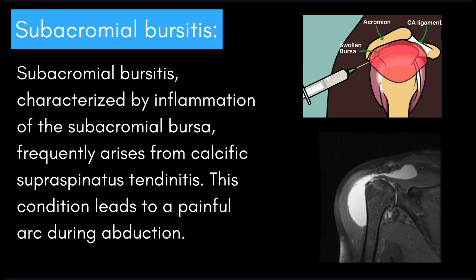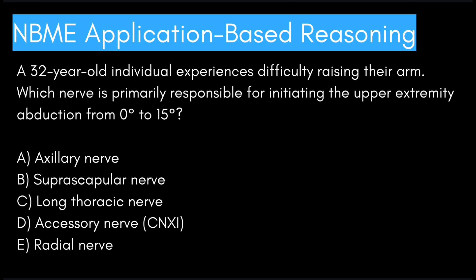Let's get started on some questions. We have a 32-year-old individual that experiences difficulty raising their arm. Which nerve is primarily responsible for initiating upper extremity abduction from 0 to 15 degrees? This is a pretty first-order question, so take your time.